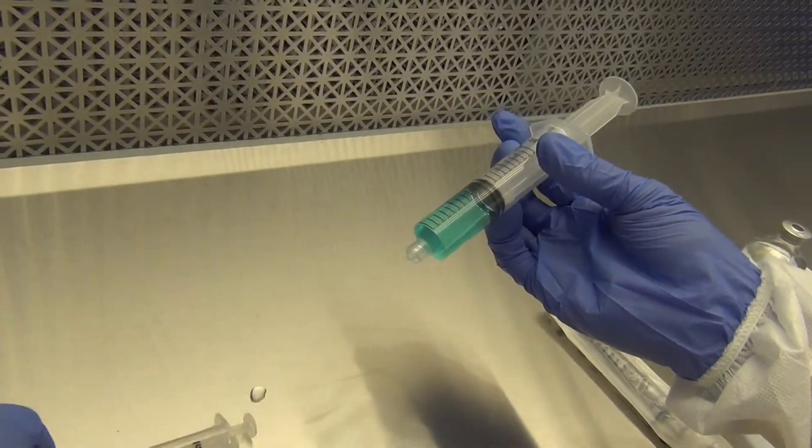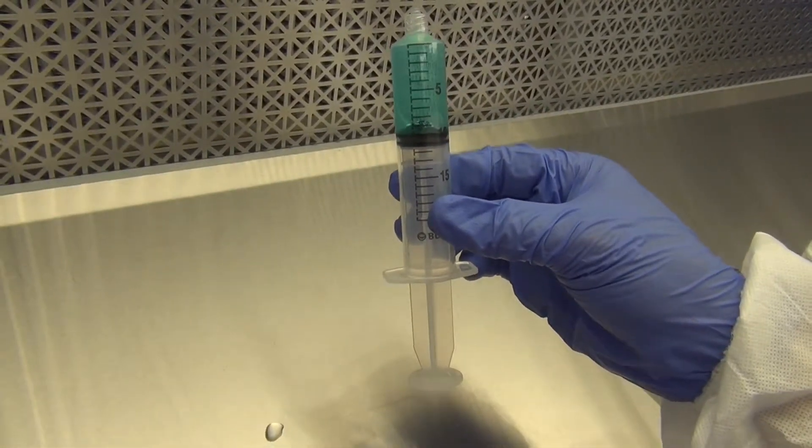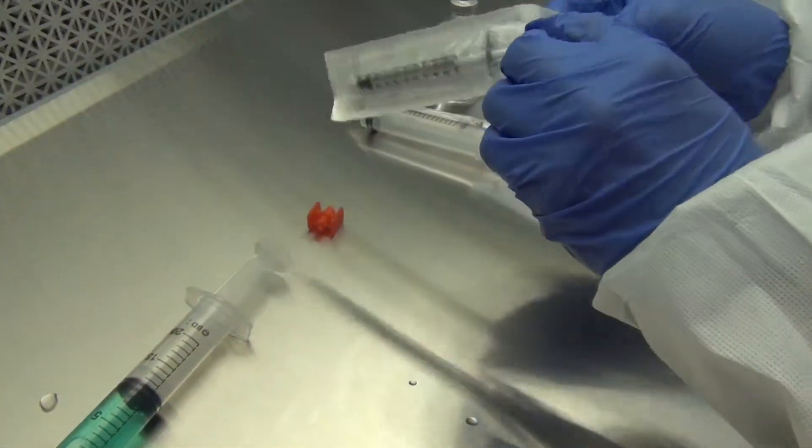After the drug is thoroughly mixed with the sodium chloride, remove the 3 milliliter syringe and get ready to perform the second dilution.